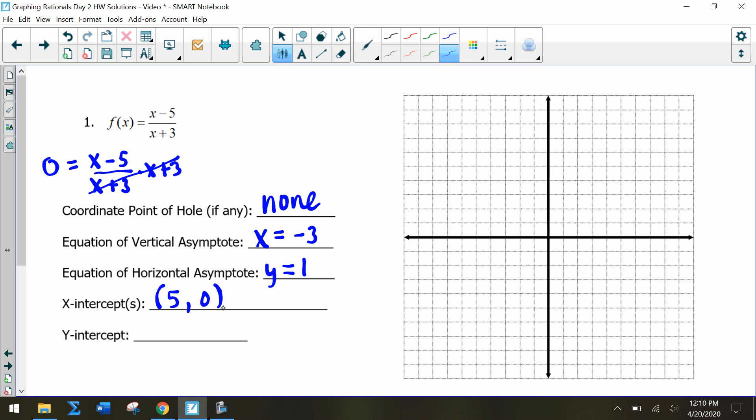To find the y-intercept, when we evaluate f(0), we have -5/3. So our y-intercept is (0, -5/3). Negative 5/3 is -1 and 2/3, so when we're graphing it, it's going to be closer to -2. Let's see what points we have.